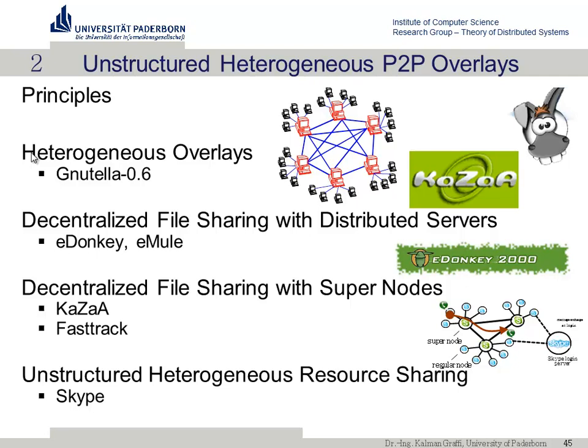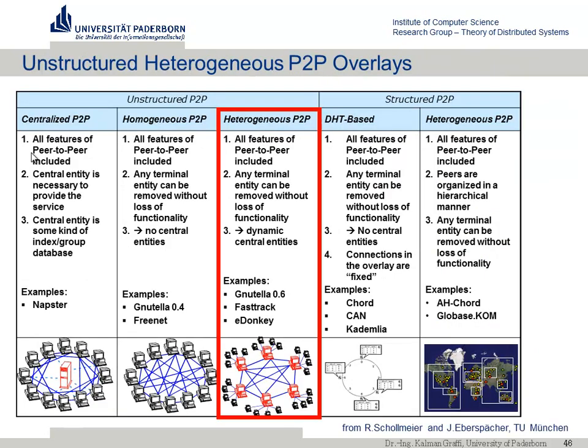We start with Gnutella 0.6, which identified flaws in Gnutella 0.4 that didn't scale well. Then we look into decentralized file sharing with distributed servers or super nodes, and also have a short look at how Skype does it. In our classification, we had centralized P2P, homogeneous P2P networks, and now the heterogeneous ones — still unstructured, meaning there is no specific information about where data is stored.